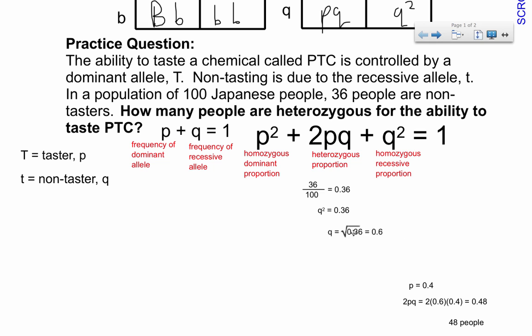So it's pretty basic math, but just in case. Q squared is 0.36. So Q is going to be the square root of 0.36, which happens to be 0.6. If Q is 0.6, I can solve for P, because P plus Q equals 1. So if Q is 0.6, then P is 0.4. Now I just need to solve for 2PQ. So 2PQ is 2 times 0.6 times 0.4, which ends up being a frequency of 0.48. I'm not done. I can't just give 0.48 as the answer, because it asks me how many people. But because it was 100 people, I know that 0.48 of 100 people is actually 48 people.